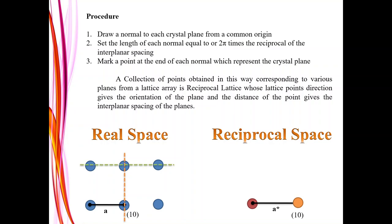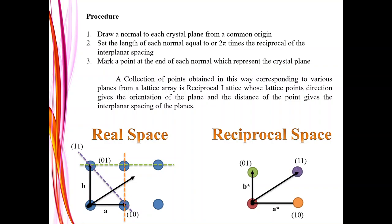Similarly, mark the next plane as (0,1), draw a normal of length b, find b* and mark it as (0,1) in reciprocal space. Likewise, continue marking all planes: (1,1), (2,1), and so on. For each, draw a normal, find that distance, take its inverse, multiply by 2π, and mark that plane. This collection of points is called reciprocal space.